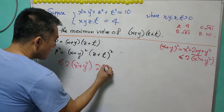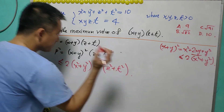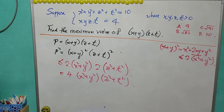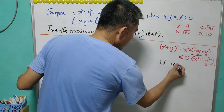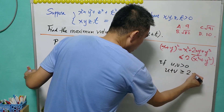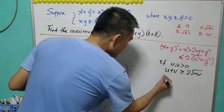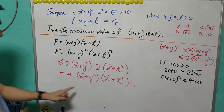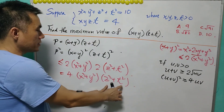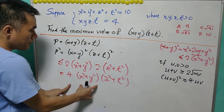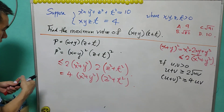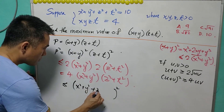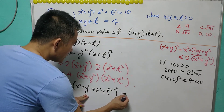For the second term, (z + t)² ≤ 2(z² + t²). So p² ≤ 4(x² + y²)(z² + t²). Using AM-GM again, for positive u and v, u + v ≥ 2√(uv), so (u + v)² ≥ 4uv. Letting u = x² + y² and v = z² + t², we get 4uv ≤ (u + v)² = (x² + y² + z² + t²)² = 10² = 100.